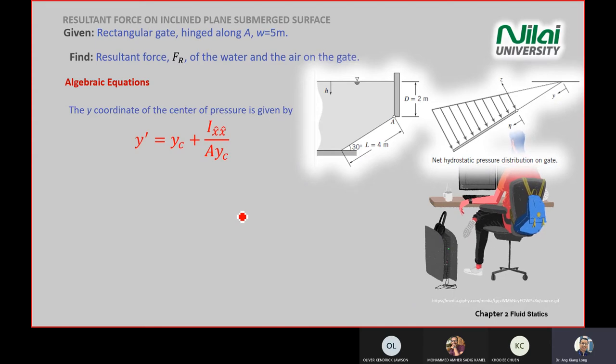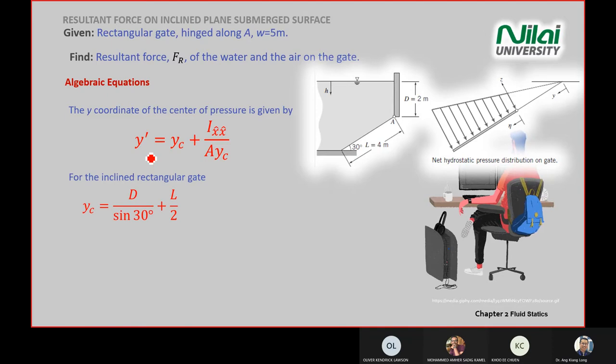For this one, you need to calculate the Y prime. So Y prime equals Y at the centroid plus the second moment of your area divided by A times your Y through the centroid. Okay. So again, this equation is the one that I showed you before we start our lecture. So this is the one that when we consider or we are using gauge pressure or we only consider without the ambient pressure.